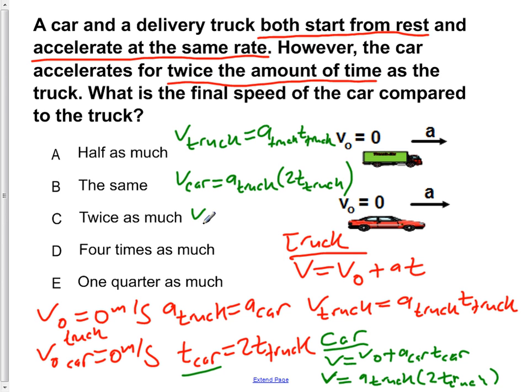So in other words, we can write this as V of the car is equal to 2 times the velocity of the truck.